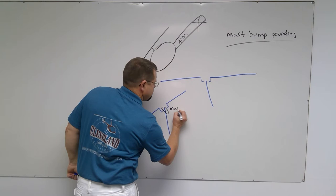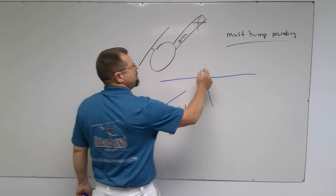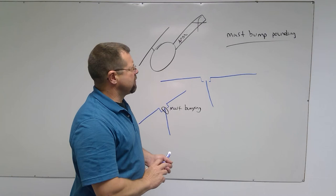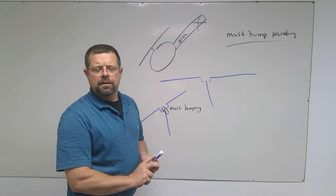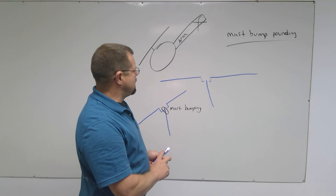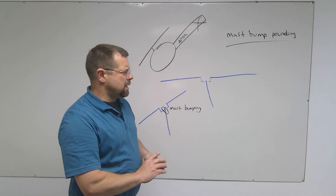So you've got mast bumping. The way to recover the helicopter in low G—and it could happen, it could be flying in high winds, turbulent air—you find yourself light in a seat, helicopter rolling either to the left or the right depending on the aircraft you're flying.